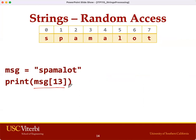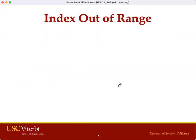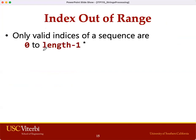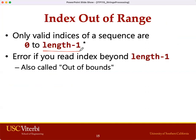Similarly, a character at index 13 — 13 is actually a value that is greater than the last valid index, which is 7. So 13 is considered out of range, which is an error. The valid index for a string or sequence is from 0 to the length of the sequence minus 1. If we use an index beyond length minus 1, we're going to get an out-of-range or out-of-bounds error.